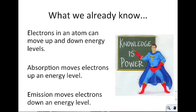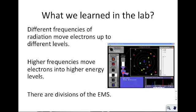We already know that electrons in an atom can move up and down in energy levels, as discussed in the first lecture. When an atom absorbs energy, it bumps the electron up, and when an atom loses energy, it bumps the electron down. Absorption moves electrons up in a level, and emission moves them down. Different frequencies of radiation can move electrons up different levels — the higher the frequency, the higher it can move the electrons up.